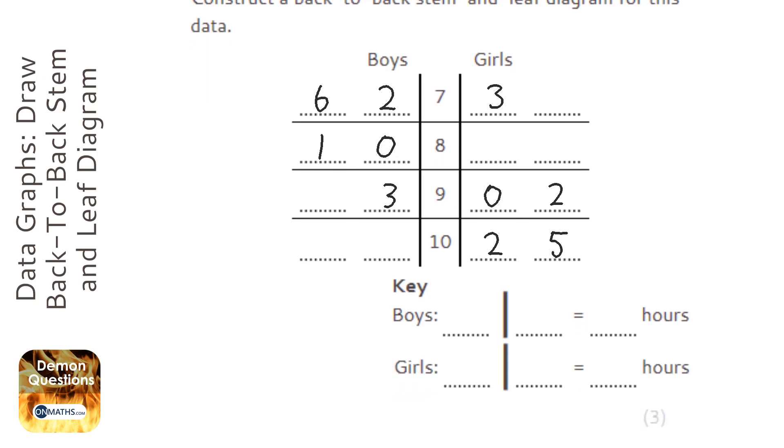The first mark is to put them into the stem and leaf diagram. The second mark, if there is one, is to order them. And then the last mark is always for the key.